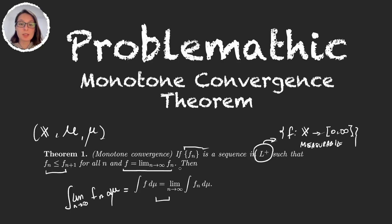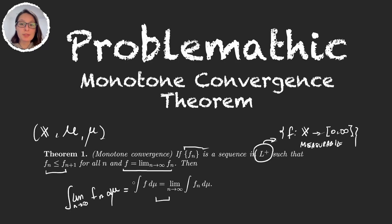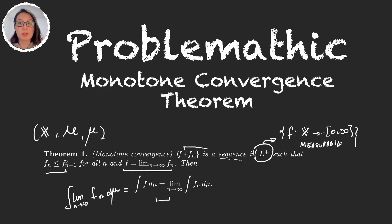This theorem is helpful because with the usual definition of the integral of a function, we had to calculate the supremum over all the integrals of simple functions that were smaller than f. Now we're just going to take a countable family — because we're taking a sequence of measurable functions that increase to f. Before, those simple functions formed an uncountable family, covering each and every simple function smaller than f. So you can see how this theorem is very important.